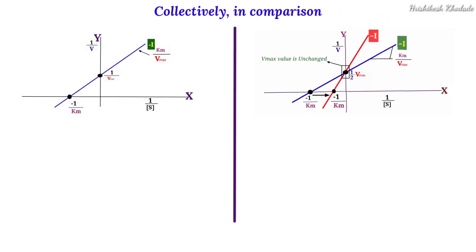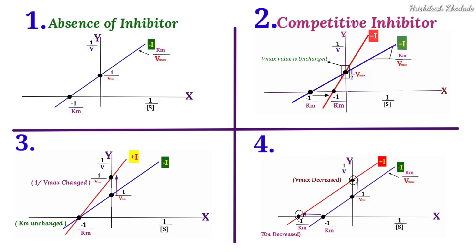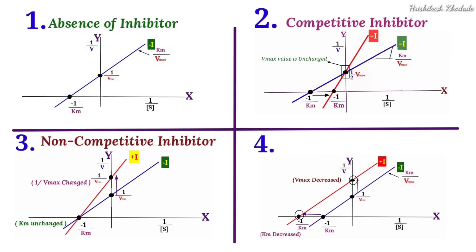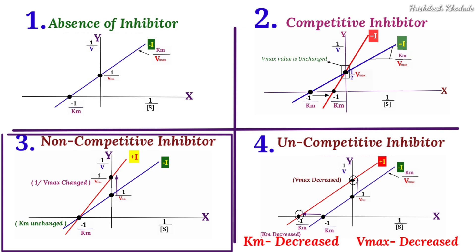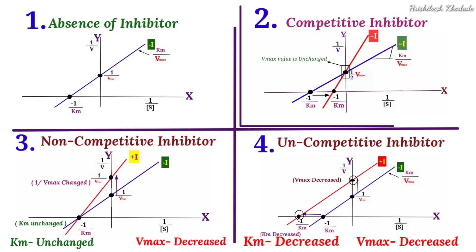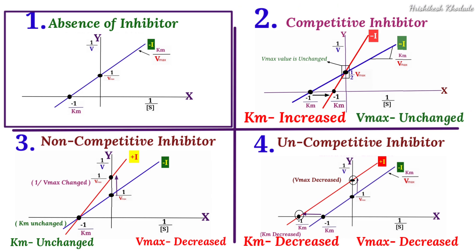Collectively, comparing all inhibition types in the Lineweaver-Burk plot: in the normal graph, standard Km and Vmax are shown; in competitive inhibition, Km increases but Vmax remains unchanged; in non-competitive inhibition, Vmax decreases but Km remains unchanged; and in uncompetitive inhibition, both Km and Vmax are decreased.